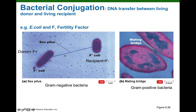By assembling the pilin protein subunits, the pilus gets longer and longer until it touches the surface of the recipient. The recipient, in response to the pheromones released by the male, has made special proteins on its surface that will act as the receptor for the tip of the sex pilus. So the sex pilus makes contact with the receptors on the recipient.